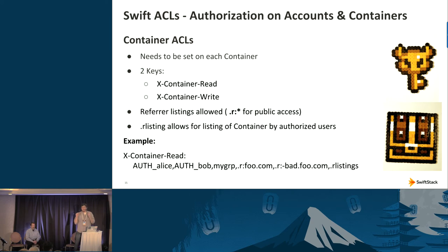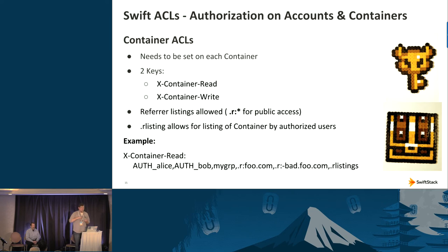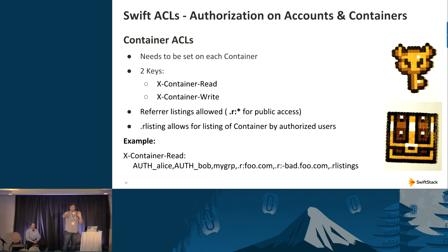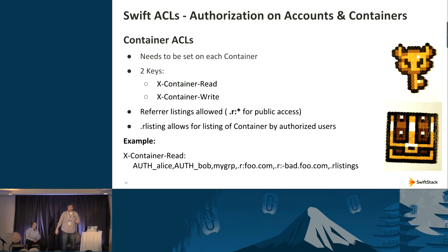If you have a group of objects in a container you want to make publicly accessible, you can use container ACLs to set the referrer. The referrer — normally spelled with only one 'r' in HTTP parlance — identifies who is making the request. Because Swift is storage built for the web, many HTTP conventions bleed into the Swift API. If you embed a URL to an image in a web page pointing to a publicly accessible Swift container, the web browser sends along the referrer header showing the originating website, and Swift can use that information to allow or deny the request.